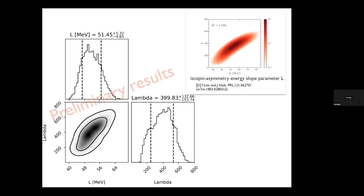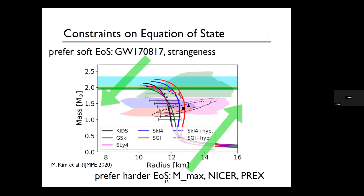Another audience question: can you say more about the Chandrasekhar-type mass limit? What LIGO sees are neutron stars of about 1.4 solar masses. Is there a prediction from the particle physics side — from strong interactions and gravity — about the maximum mass? The speaker replied that the KIDS model gives a maximum mass of about 2.2 solar masses, which is consistent with the observed approximately 2-solar-mass neutron stars from pulsar timing.